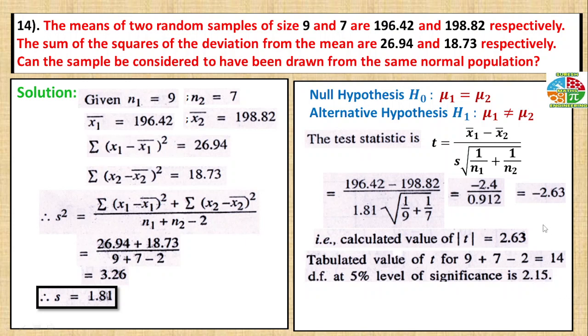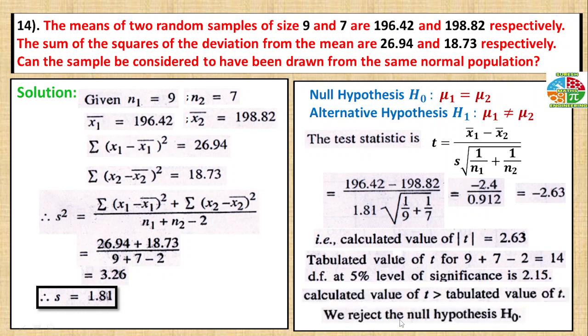The table value is 2.1 but the calculated value is 2.6. Therefore, we reject the null hypothesis. Conclusion: the two population means are not equal.